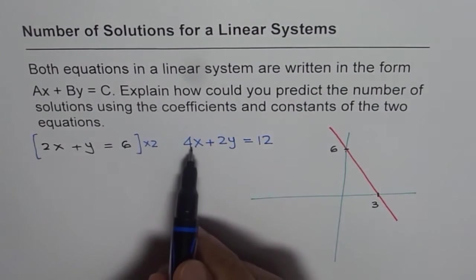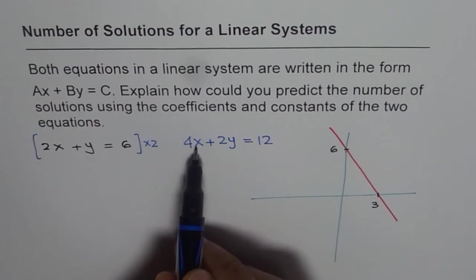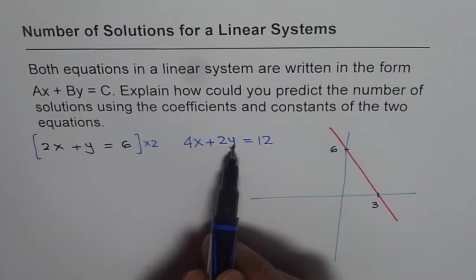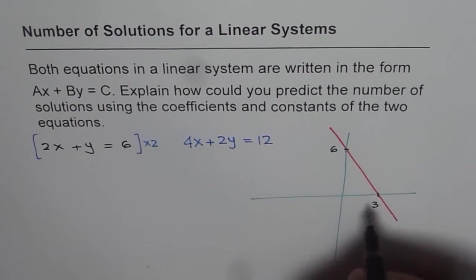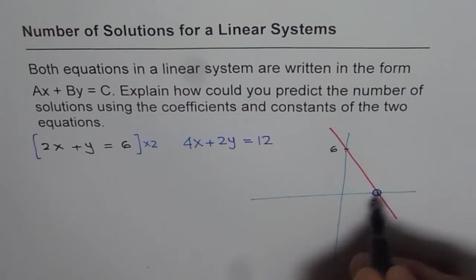Now, if you analyze this line, what is the X intercept? Y is 0. That means this term is 0. 12 divided by 4 will give us 3. Same. Do you see that? Same X intercept.